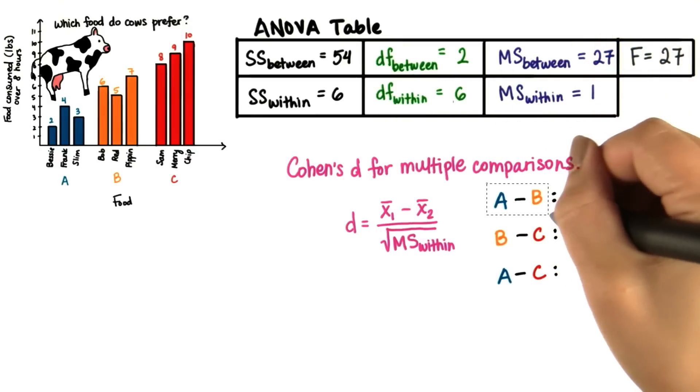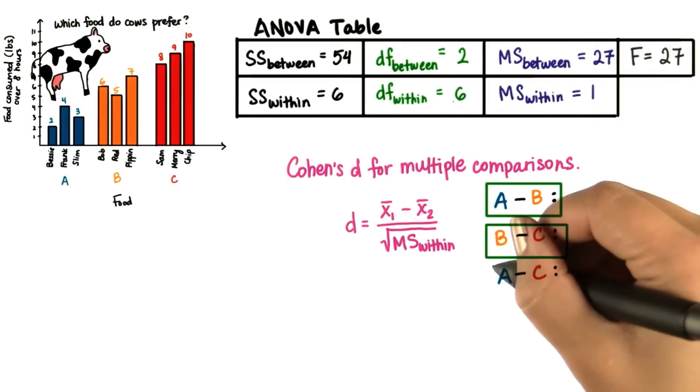Compute Cohen's d for the difference in means, going in the direction symbolized.